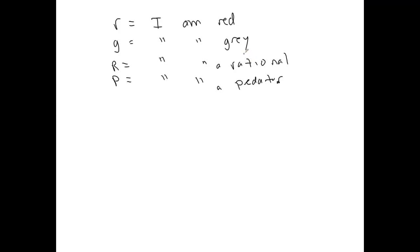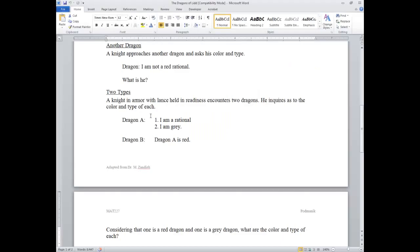Recall with our dragons of lid problem: we had rational dragons and predators. Rational dragons were always truth tellers — they told the whole truth — and predators always told lies. Those lies didn't have to be on every component or every descriptor of what they said; they just had to tell something that was untrue. So where we left off was the two types of dragons.